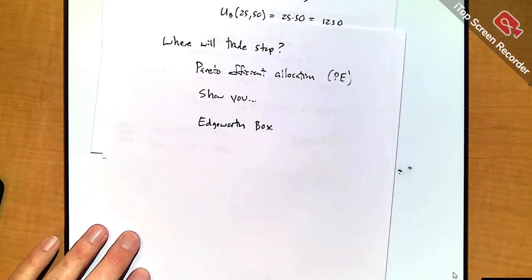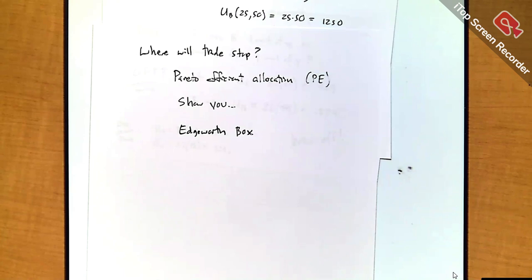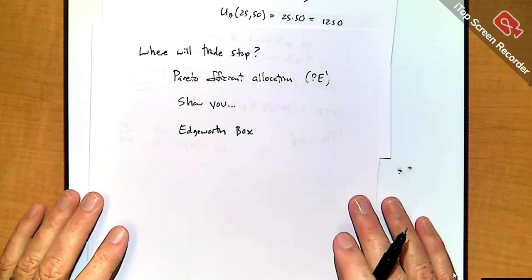Here's how it looks. The Edgeworth box is genius as long as you have two people and two types of goods. It's a nice illustration of what allocations are feasible and how good they are, so instead of all the math and the stories you can just look at one picture and hopefully it sort of all becomes illuminated. It's going to look like a box, of course.